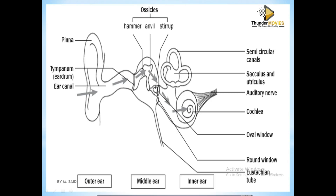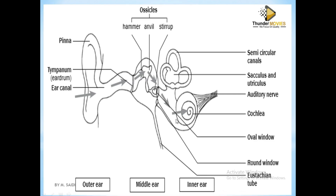The ossicles are attached to a window. We have two kinds of windows in the ear: the oval window and the round window. The oval window is oval in shape, and the round window is round in shape. The oval window is attached to the last bone, which is the stapes, and causes the vibration of the oval window. The vibration creates a wave-like movement into the liquid found here, which is called the endolymph. The endolymph takes information to a part called the cochlea.